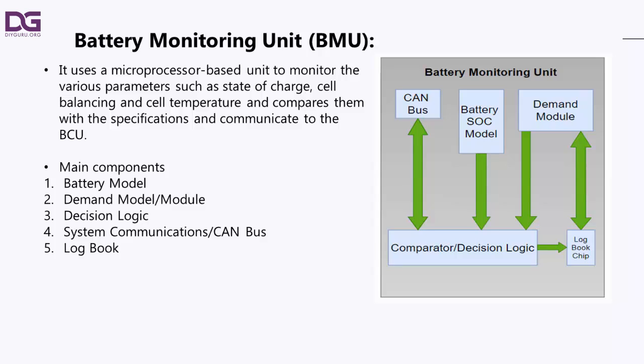Logic circuits then provide error messages to initiate cell protection actions or to use in the various BMS feedback loops, which drive the system to its desired operating point or isolate the battery in the case of unsafe conditions. These error messages provide the input signals for the battery control unit.